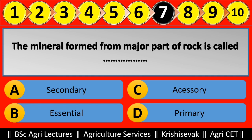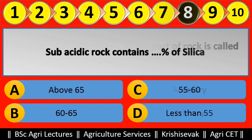Question 8: Sub-acidic rock contains blank percent of silica. Options are: (a) above 65, (b) 60 to 65, (c) 55 to 60, (d) less than 55. Right answer is option B: 60 to 65.